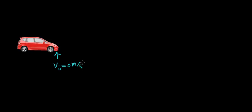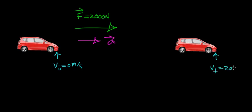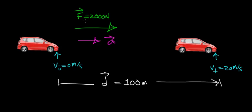Now let's do a basic problem to figure out how much energy is required to increase the velocity of a car. We assume the car starts from rest at 0 meters per second, and we apply a 2,000 newton force directed in the positive x direction. From Newton's second law, this force causes the car to accelerate, reaching a final velocity of 20 meters per second over a total displacement of 100 meters. The question is: how much work does this force do on the car over this distance?